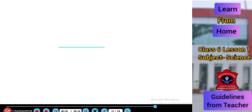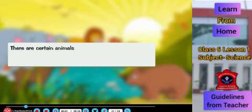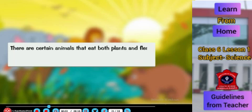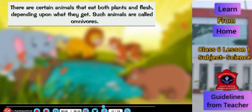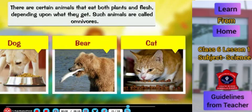Then we have animals which eat both plants as well as flesh of other animals. Common examples are the dog, bear, and the cat.